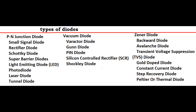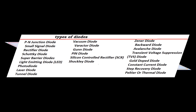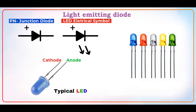What are the types of diodes? We have PN junction diode, Varactor diode, PIN diode, photodiode, laser diodes, super barrier diodes, transient voltage suppression diodes, avalanche diodes, backward diodes, Zener diodes, step recovery diodes, and also light emitting diodes. For example, this is a light emitting diode with different colors.